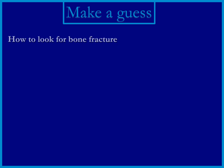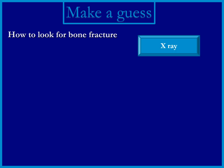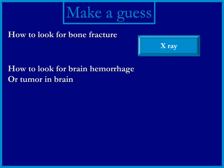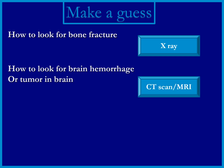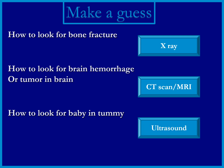Let's make some guesses. How to look for a bone fracture? We normally do X-ray to find out the bone fracture. How to look for a brain hemorrhage or a tumor? We all know we have to do CT scan or MRI. And how do you look for a baby in the tummy? We do the ultrasound. The reason we do X-ray, CT scan, and ultrasound is because we cannot see the object directly.